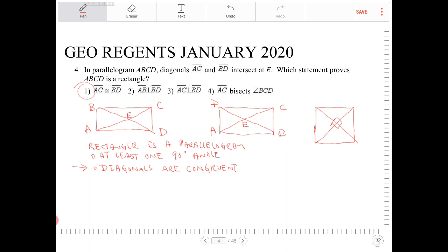Number four, option four, AC bisects angle BCD. So that is only true if, again, we're talking about either a square or a rhombus. So options three and four will be true in justifying that ABCD is a square or a rhombus.